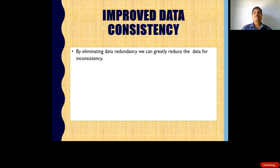Improved data consistency: by eliminating data redundancy, we can greatly reduce data inconsistency. When the same kind of data is repeated, it leads to inconsistent and inaccurate information. By eliminating redundancy, we can ensure consistent and accurate information is maintained.